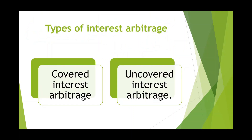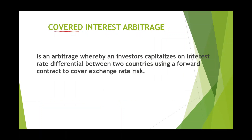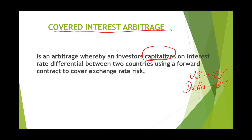There are two types of interest arbitrage. First is covered interest arbitrage, and secondly, uncovered interest arbitrage. In covered interest arbitrage, the investor utilizes the interest difference between two countries. For example, the US has 10% interest whereas India has 8%, a difference of 2%. The investor wants to utilize this difference using a forward contract to cover the exchange rate risk.